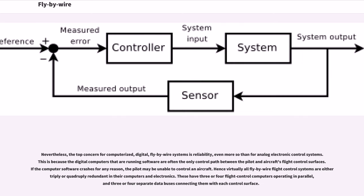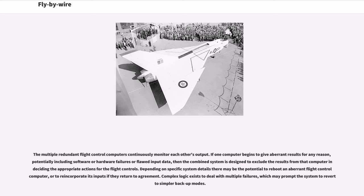The top concern for computerized digital fly-by-wire systems is reliability, even more so than for analog electronic control systems. This is because the digital computers running software are often the only control path between the pilot and the aircraft's flight control surfaces. If the computer software crashes for any reason, the pilot may be unable to control the aircraft. Hence, virtually all fly-by-wire flight control systems are either triply or quadruply redundant in their computers and electronics, with three or four flight control computers operating in parallel.